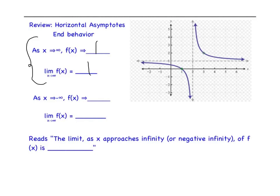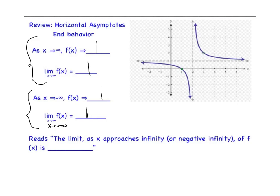As x goes to infinity, the graph is trending to 1. If we go the opposite direction — as x goes to negative infinity — you can see that y is getting really close to the asymptote from underneath it, from the bottom. It's still getting very close to 1; it doesn't actually reach 1 in either case. So we would say the limit as x approaches negative infinity of f of x is also equal to 1.